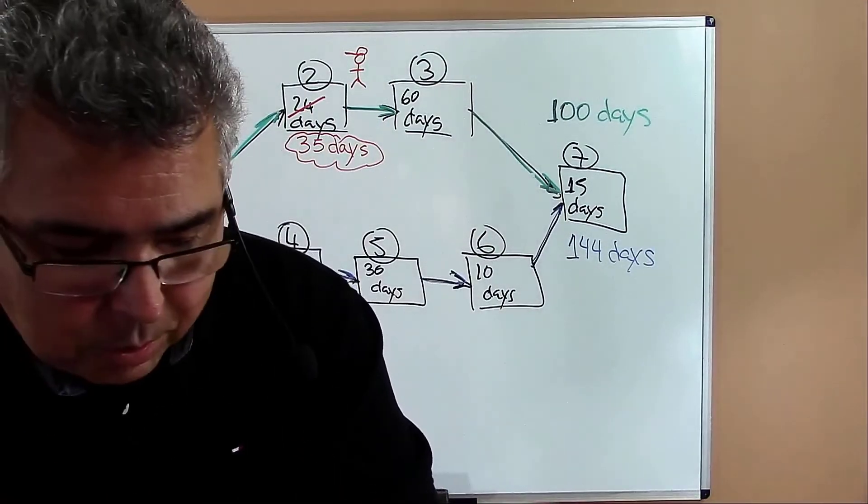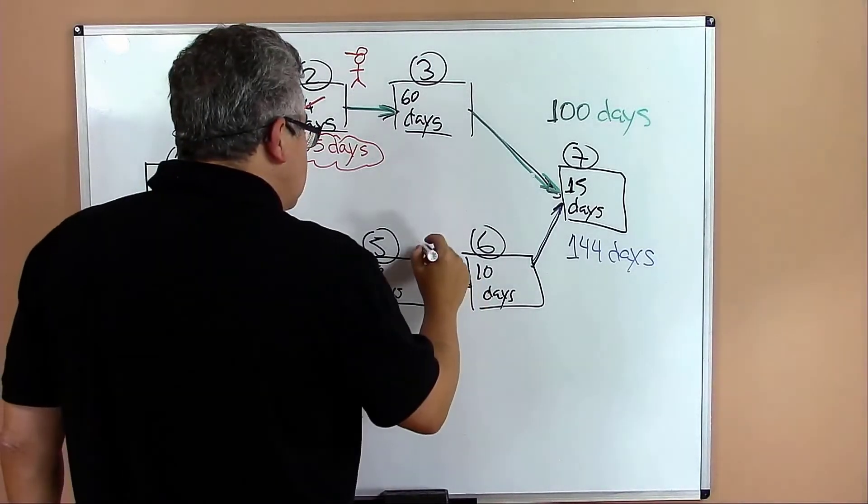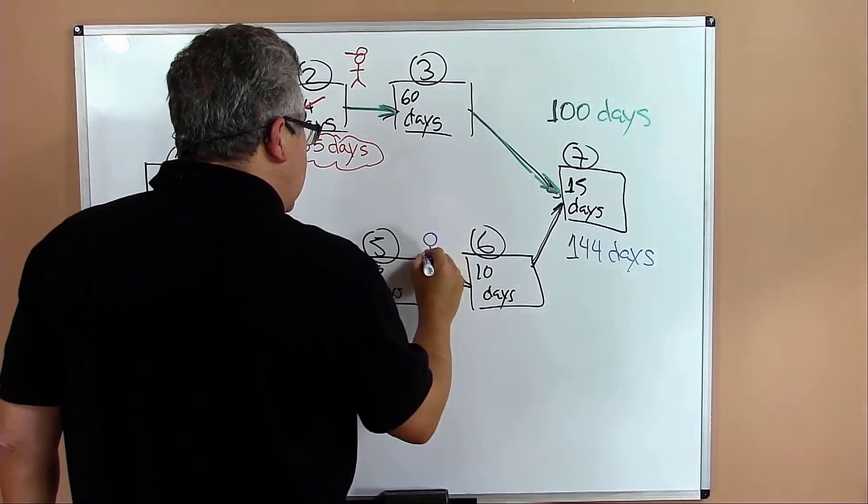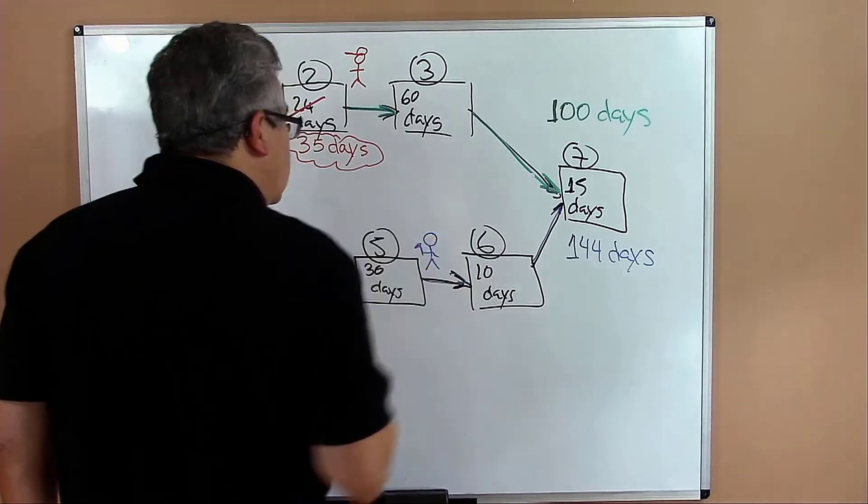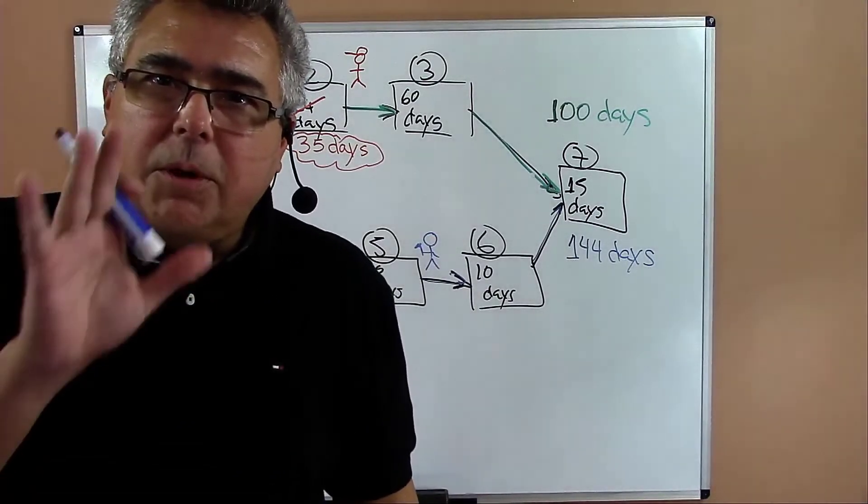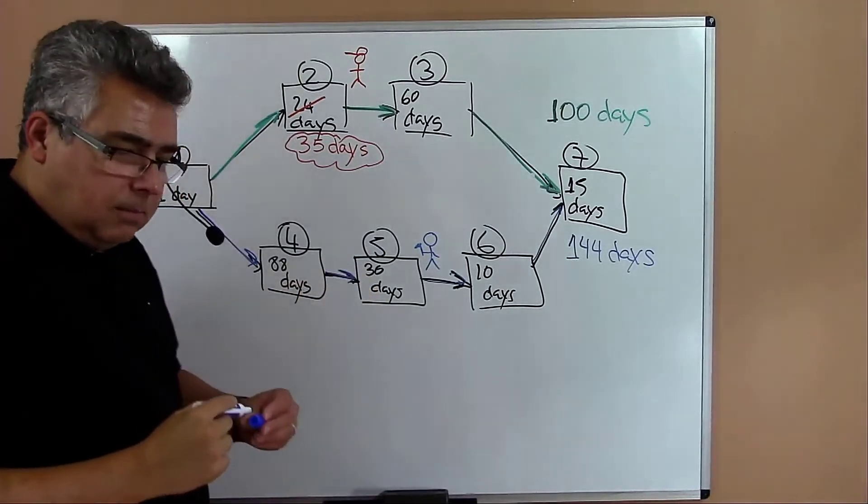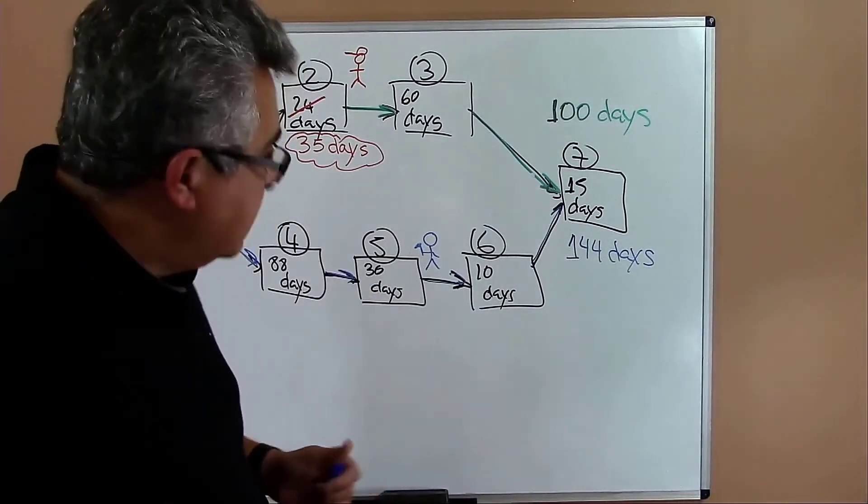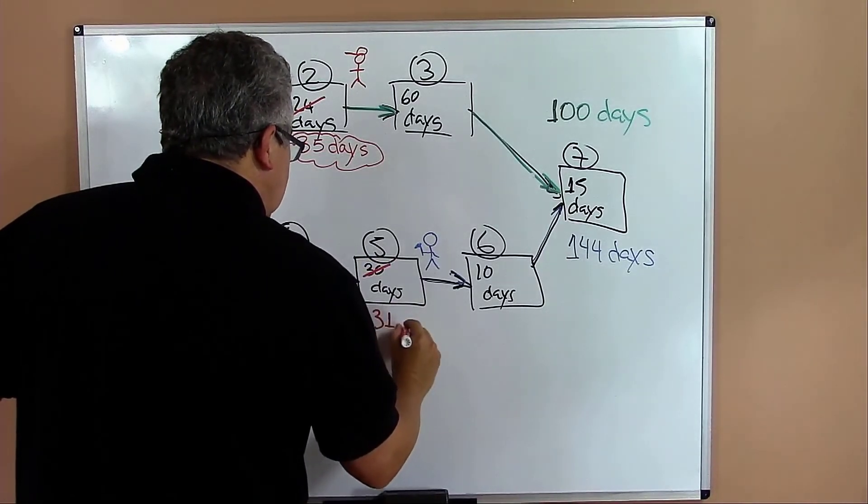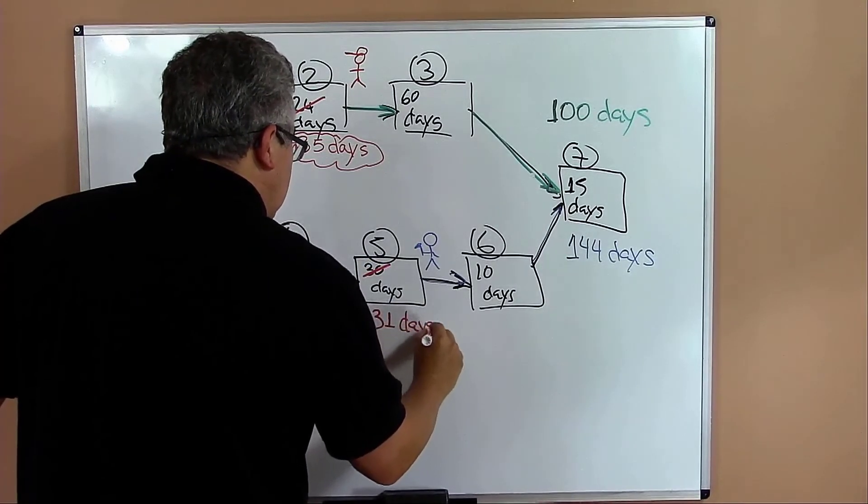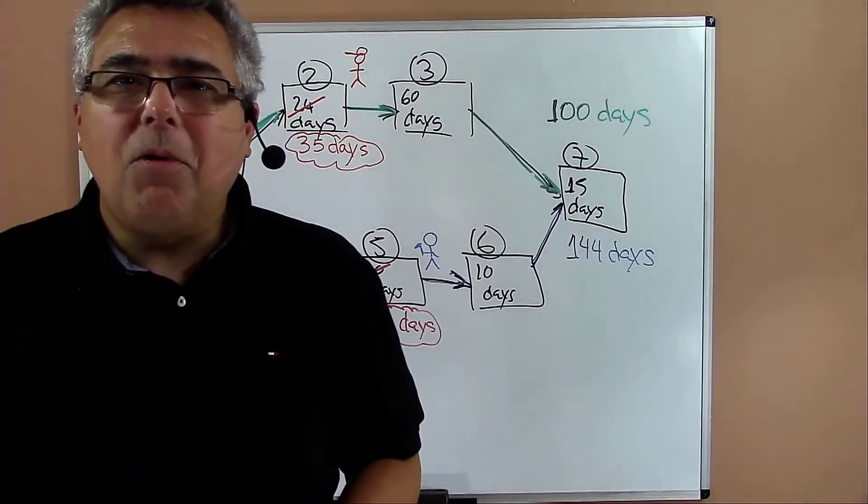But on the blue side we have a guy here that is Mike. Mike is working with a hammer, and we have to be careful because Mike, instead of taking 30 days, takes 31 days, delays one day. What are the consequences for that?